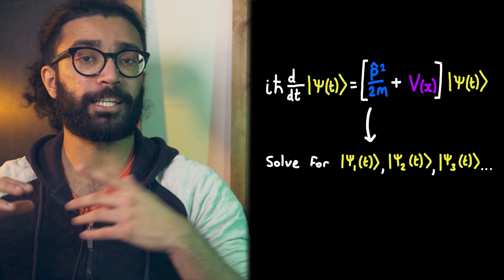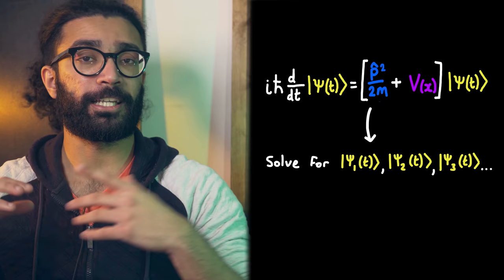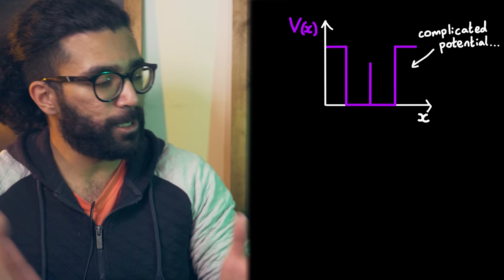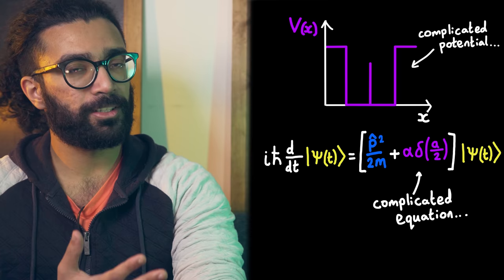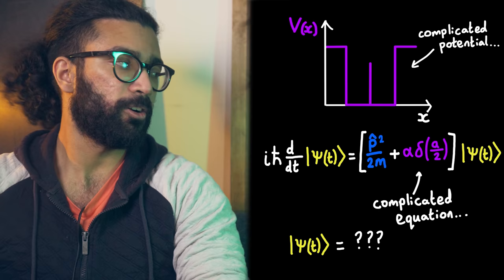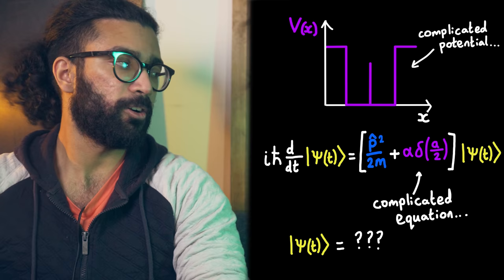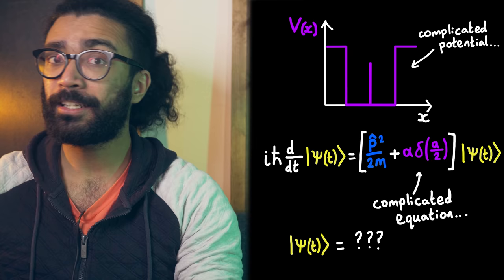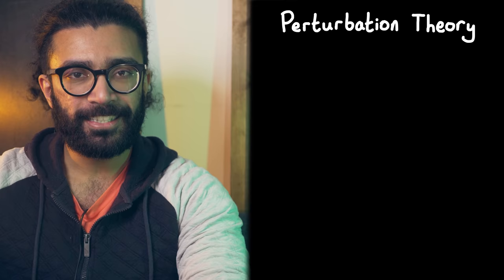Why is it difficult? Because even though we can plug in the information about a particular system, that doesn't necessarily mean we know how to solve the Schrödinger equation for that system to find the allowed wave functions. The equation can become very complicated very quickly, and we might end up with a differential equation that we have no techniques to solve. Luckily, there are a few clever techniques we can use to work out an approximation of the wave functions, even if we can't calculate exactly and even without a computer. One way to do this is by using perturbation theory.